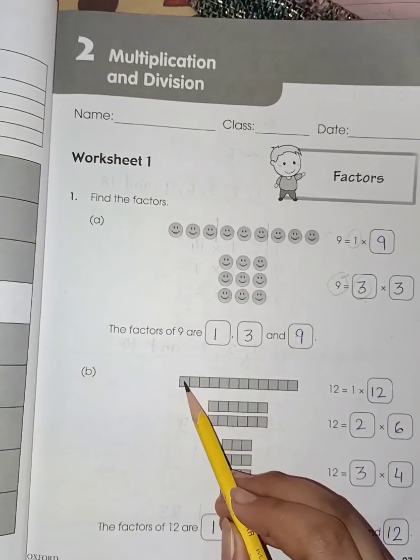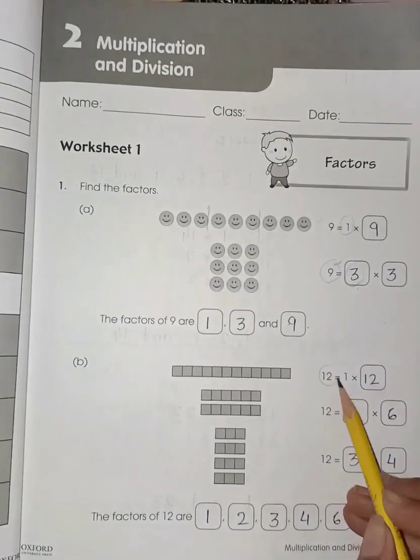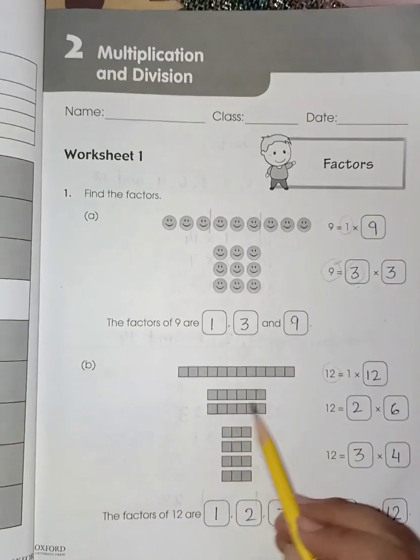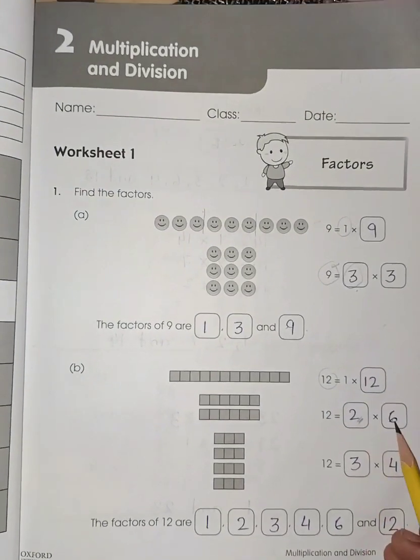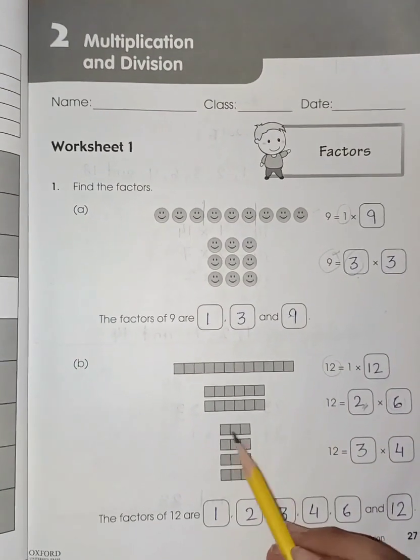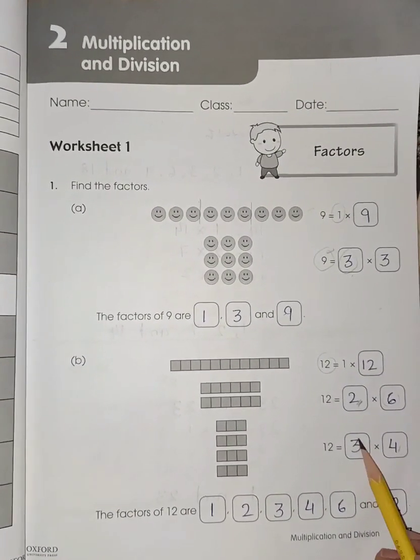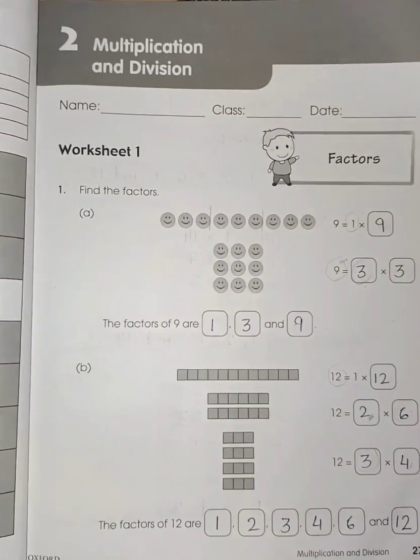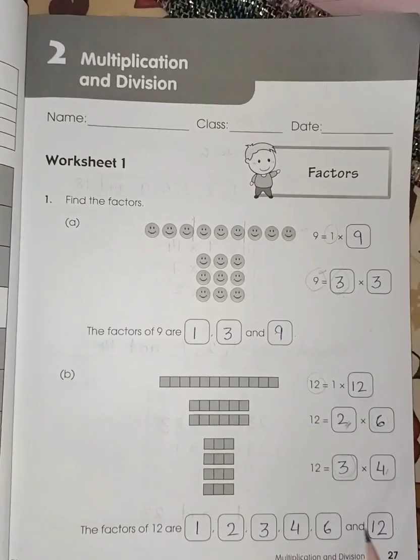Now again count, there are 12 smiley faces total. 1 multiplied by 12. Now here you can see we can make the factor of 12 with 6 and 6. So we have 2 factors of 6 and 6 are 12. Now we can make 4 factors with the number 3. 3 times 4 are 12. So the factors of 12 are 1, 2, 3, 4, 6, and 12.